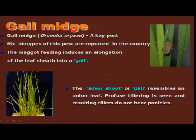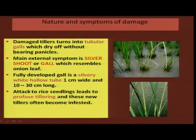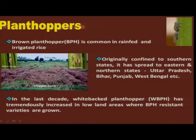The next important pest is gall midge, scientifically referred to as Orseolia oryzae, an important key pest particularly in the coastal region of the country. It has 6 biotypes identified so far. The maggot is the damaging stage, which causes the elongation of a gall, also called a silver shoot or gall, which resembles almost an onion leaf. Such plants will not bear any panicle, as can be seen clearly in this slide — you can see the extended gall where the maggot is feeding inside. The tillers that come out also do not bear any panicle, so there is no airhead formation.